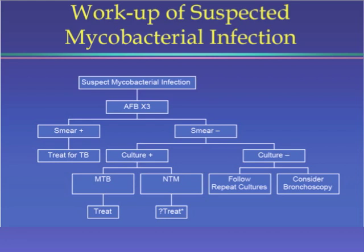This is an area of controversy. Someone who's smear negative and culture positive implies a smaller organism burden — could be MTB or NTM, so sometimes you have to wait or go ahead and treat for MTB depending on clinical suspicion. Someone who is smear negative and culture negative: do they need more specimens submitted or a bronchoscopy? That's where you use your clinical skills to determine which route to take.